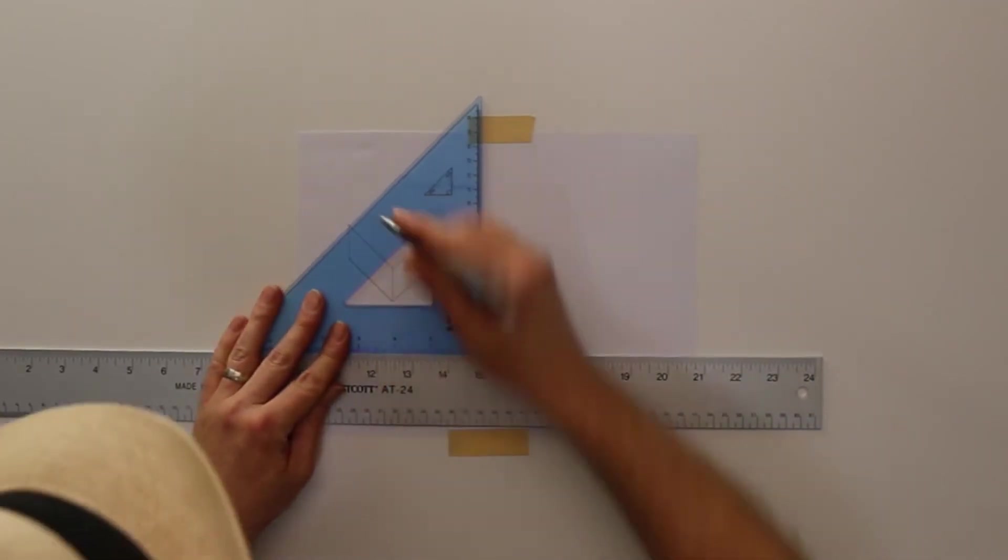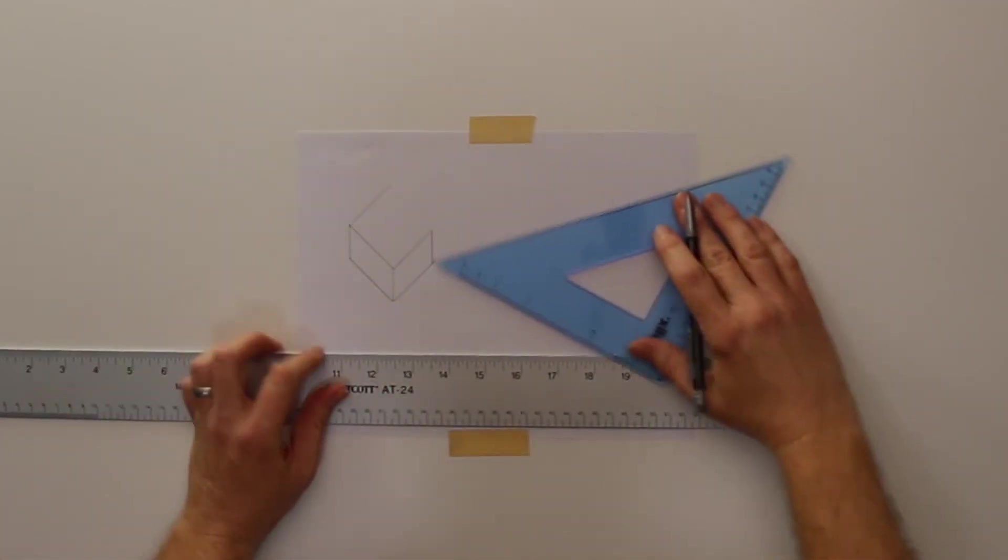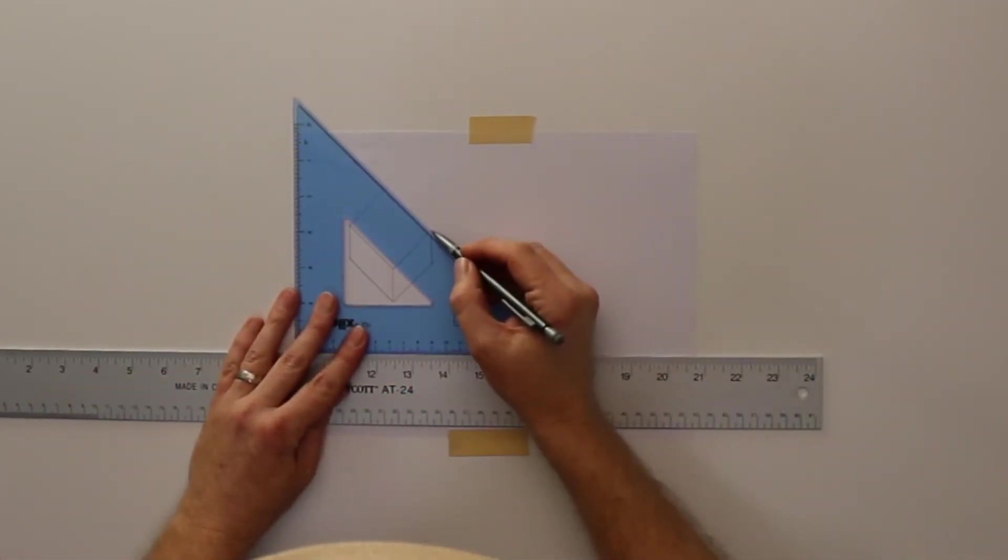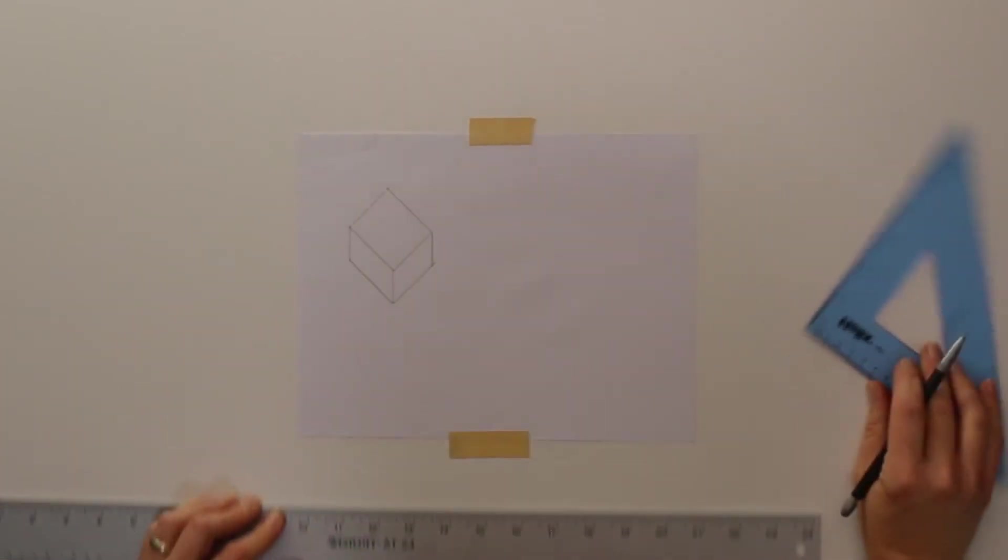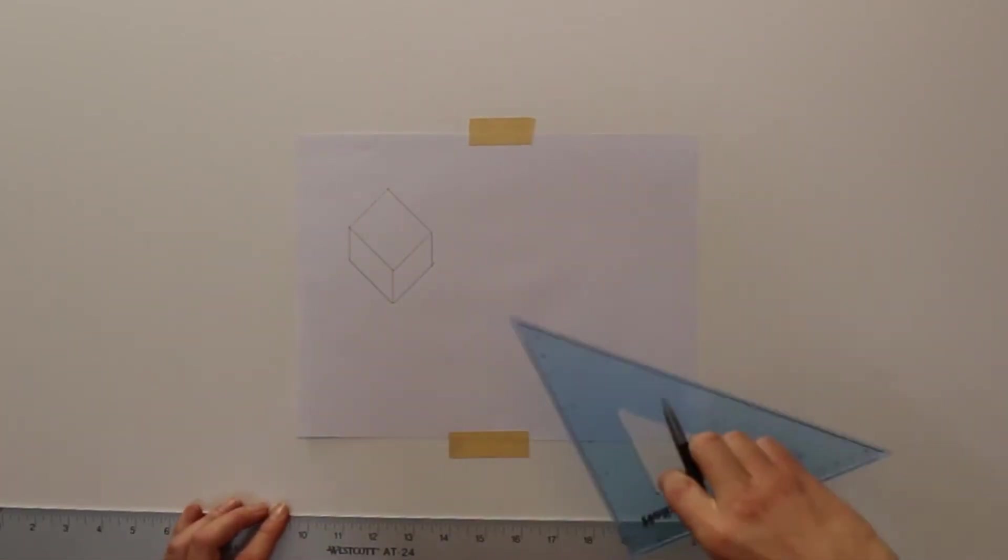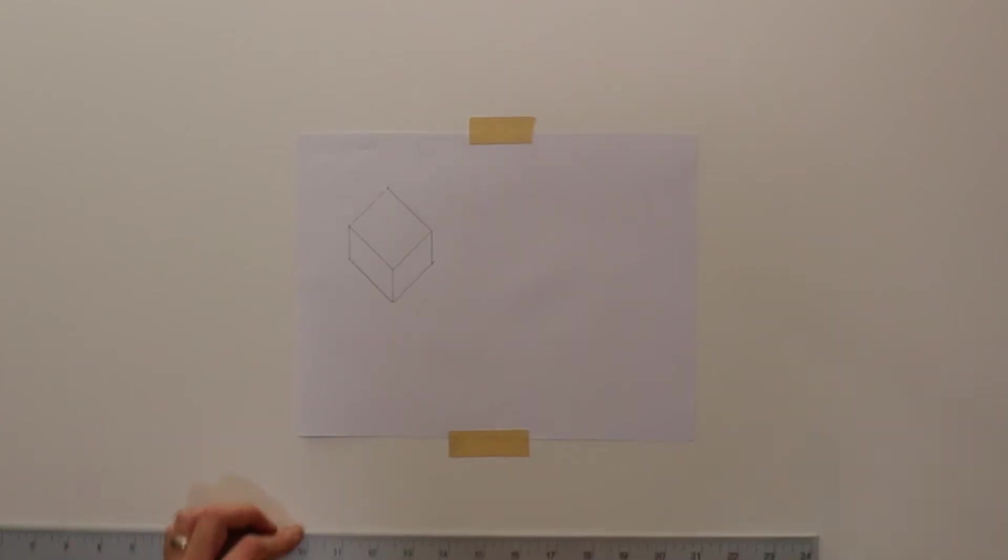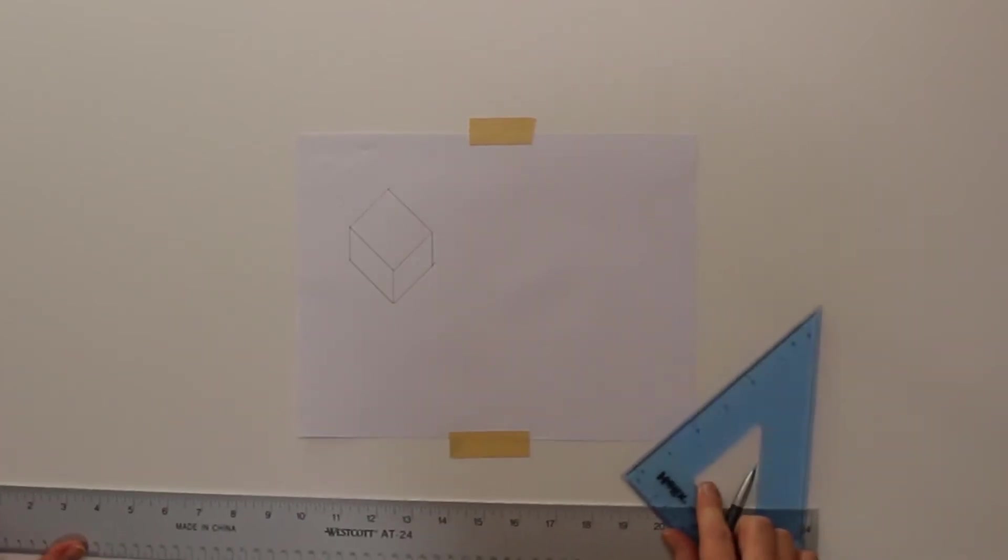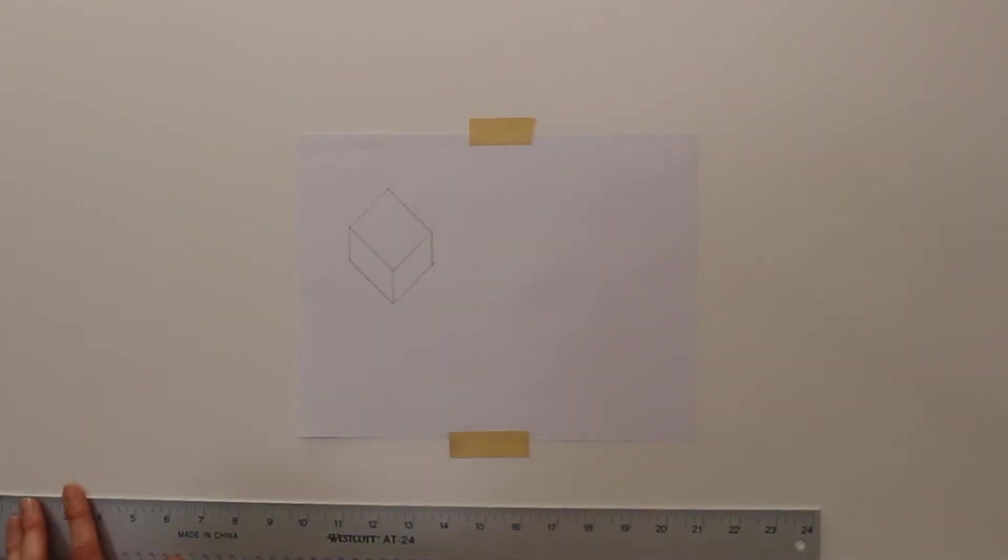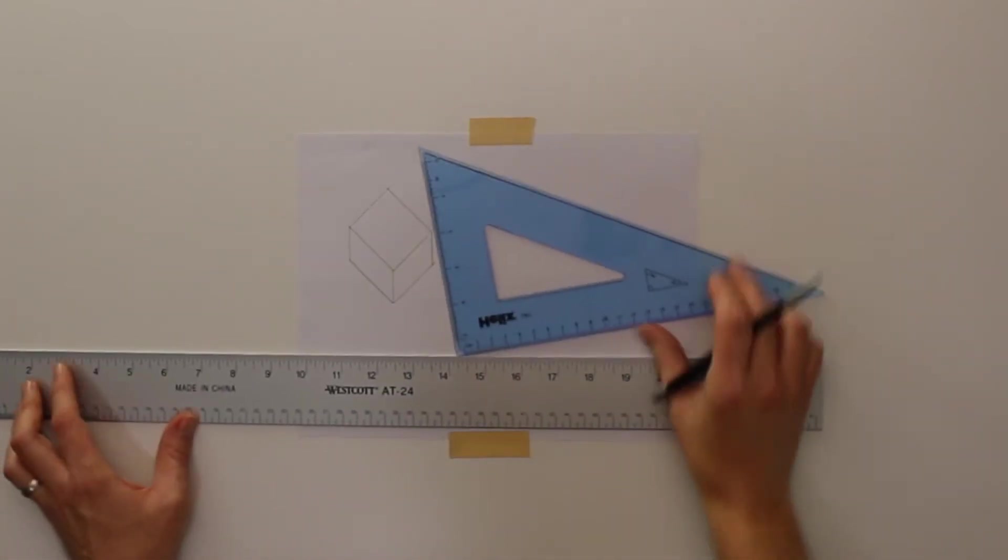Now, what do we do? We can do this back corner like that. Do the top, flip it around. Look how fast we did that. We didn't have to approximate. We didn't have to guesstimate. Using these two things together, we can draw a box at a 45-degree angle.